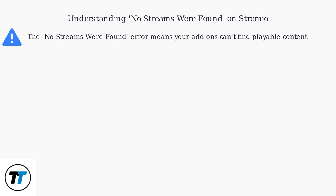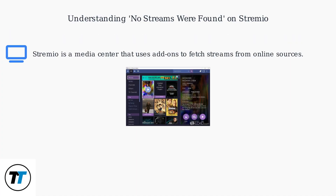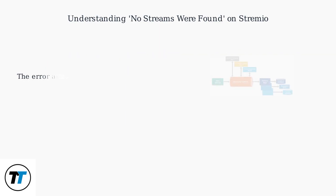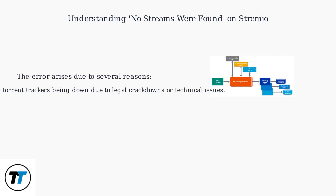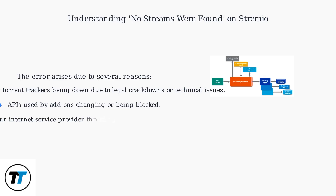The 'no streams were found' error on Stremio means your add-ons can't find playable content. Stremio itself is a media center that uses add-ons to fetch streams from online sources. The error arises due to several reasons: source websites or torrent trackers being down due to legal crackdowns or technical issues, or APIs used by add-ons changing or being blocked.